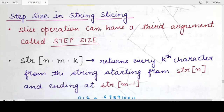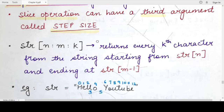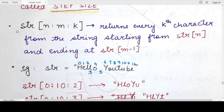One important term you must understand is step size in string slicing. The slice operation can also take a third argument apart from the starting and ending index, and that argument is known as the step size. The syntax would be: string name, then square brackets, starting index, colon, ending index, colon, and the step size.